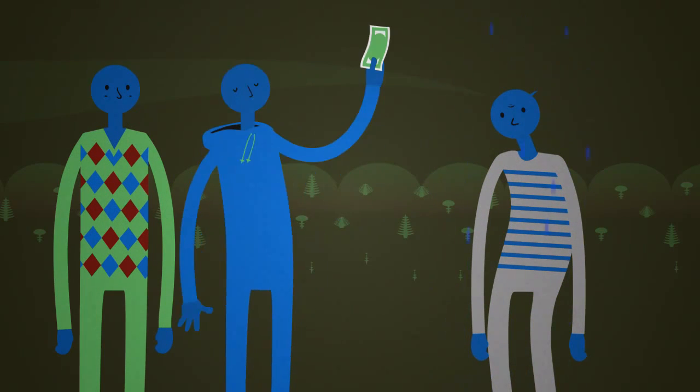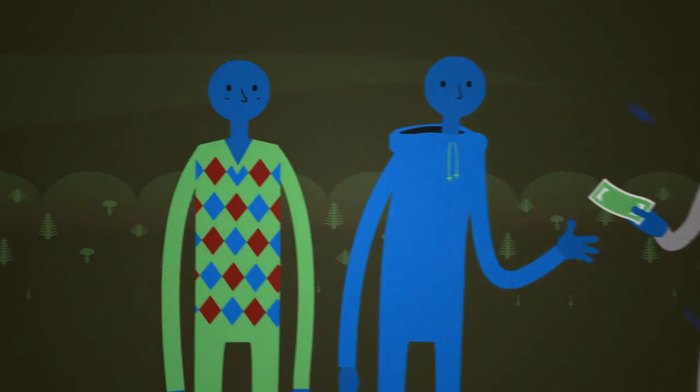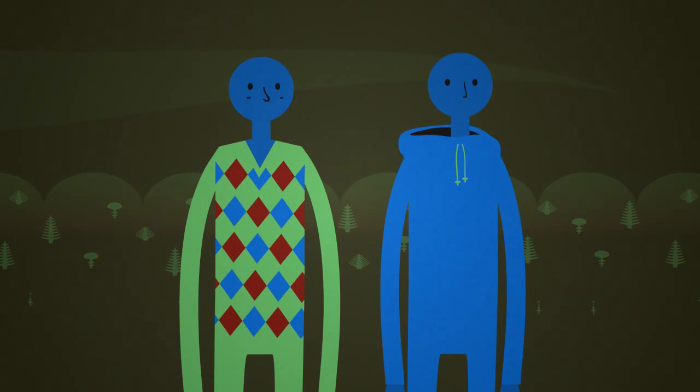You want to help Oliver out, so you give him some money. To your surprise, George doesn't offer Oliver any help.